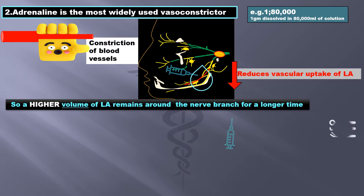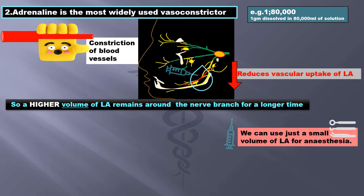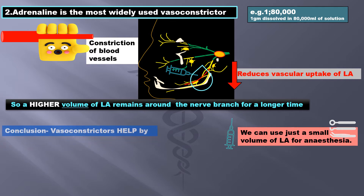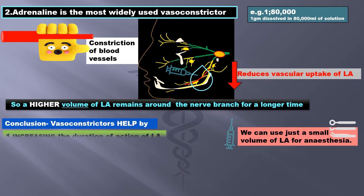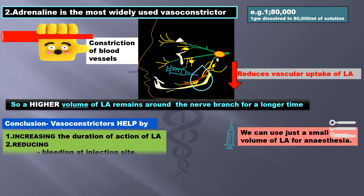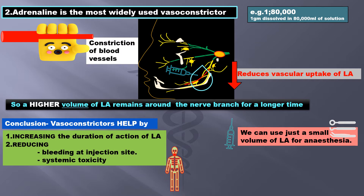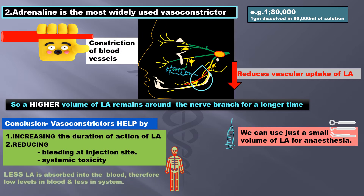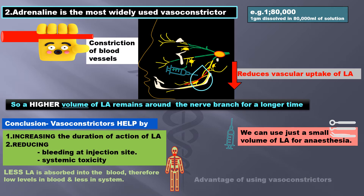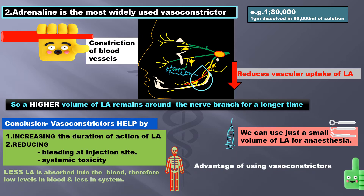This is helpful because we can use just a small volume of LA for anesthesia. We may conclude that vasoconstrictors help by: 1. Increasing the duration of action of LA. 2. Reducing bleeding at the injection site, as well as reducing systemic toxicity, because less LA is absorbed — therefore lower levels of LA in blood. These are the advantages of using a vasoconstrictor in the local anesthetic solution.